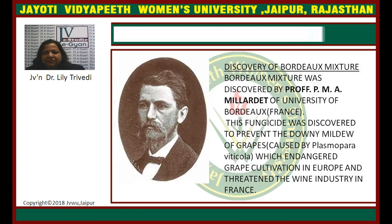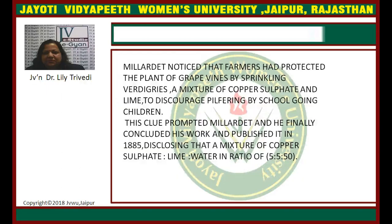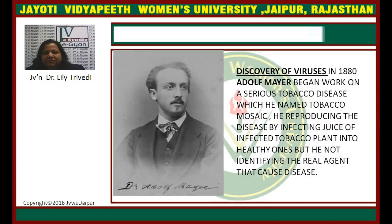The discovery of Bordeaux mixture. Bordeaux mixture is an important fungicide and it was discovered by Professor P.M.A. Millardet of the University of Bordeaux in France. This fungicide was discovered to prevent the downy mildew of grapes caused by Plasmopara viticola, which endangered grape cultivation in Europe and threatened the wine industry in France. Millardet noticed that farmers had protected their plants by sprinkling verdigris — a mixture of copper sulphate and lime — to discourage pilfering by school-going children. This clue prompted Millardet, and he finally concluded his work and published in 1885, disclosing that a mixture of copper sulphate, lime, and water in the ratio of 5:5:50 is the Bordeaux mixture.